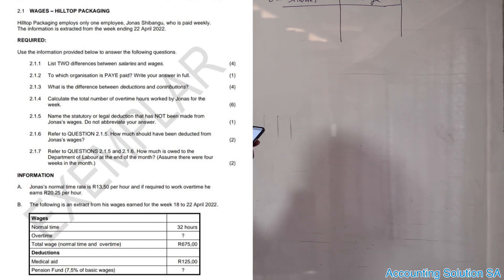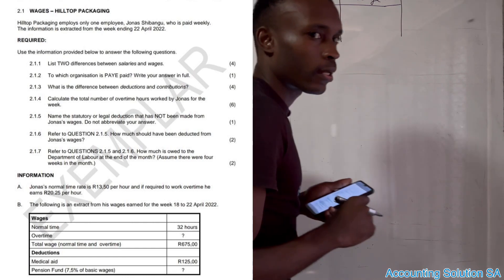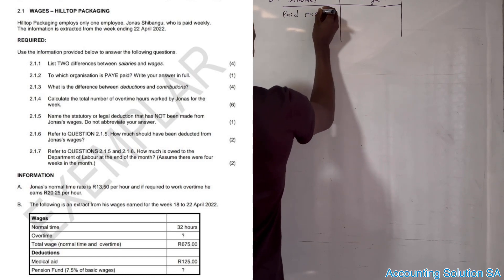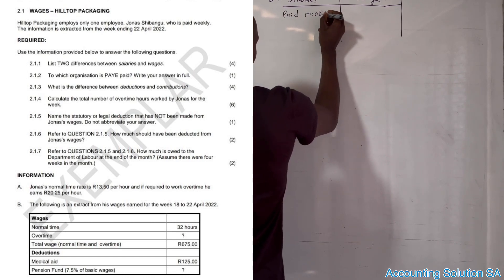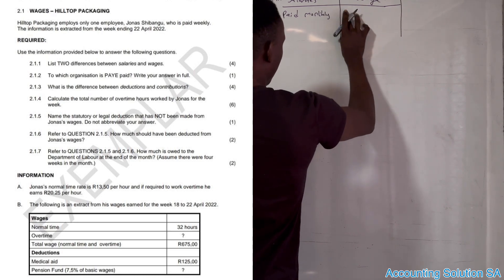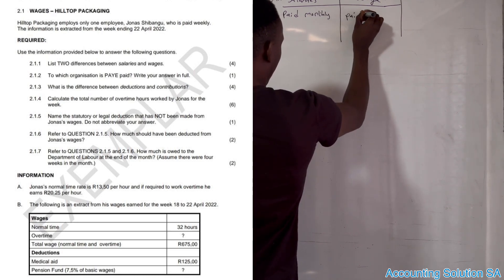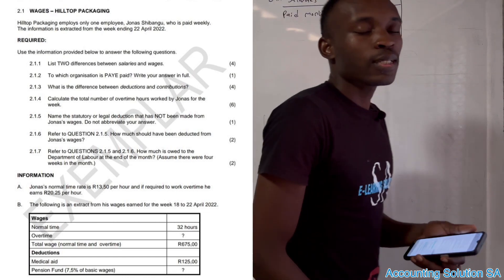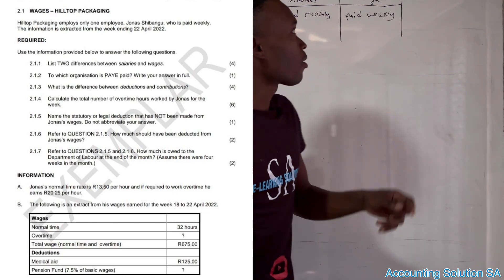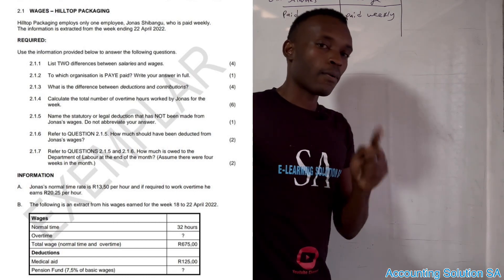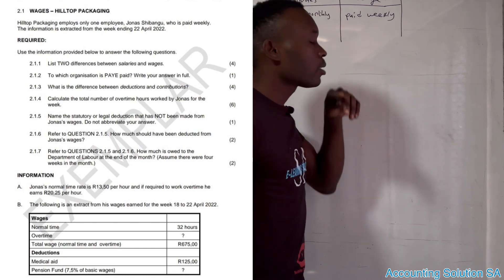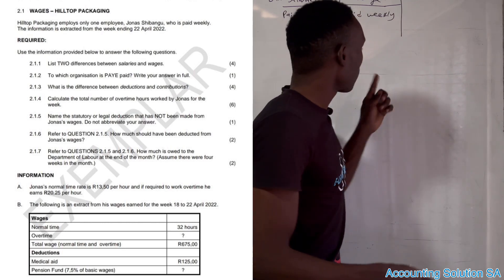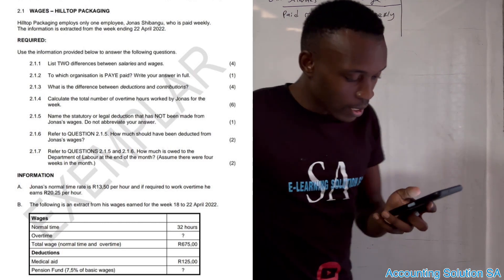The first difference: salary is paid monthly, while wages is paid weekly. In other words, if you are earning a salary you are going to receive it at each month end, while wages are paid normally every Friday. That's the first difference between these two.